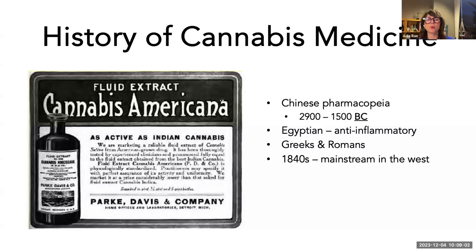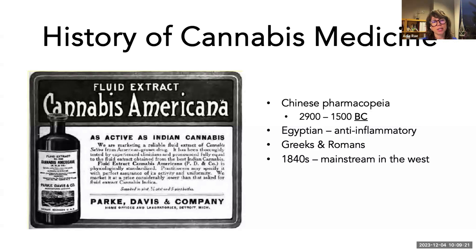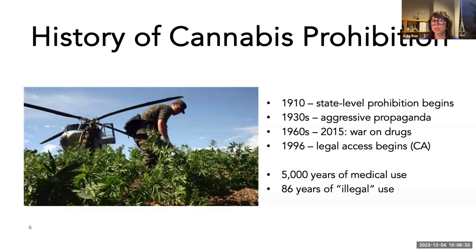The first half of the talk today is going to be basic information about cannabis. Then after our break, we'll get into how that information interfaces with parents and the child welfare system. I'd like to step back and talk about how long cannabis has been used as a medicine — more than 5,000 years, dating back to the Chinese pharmacopoeia. The Egyptians, Greeks, and Romans all used cannabis for pain relief, and it was even a mainstream medicine in every American pharmacy through the 1800s.